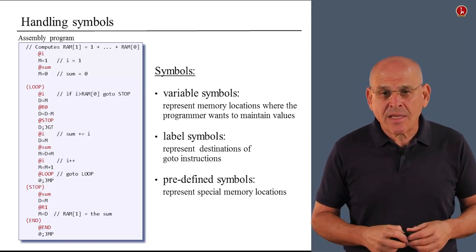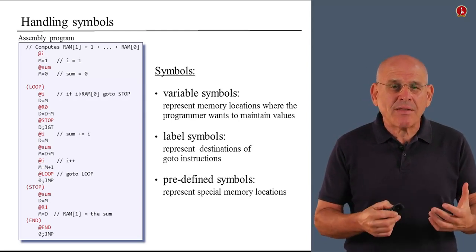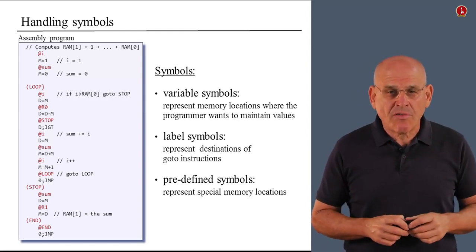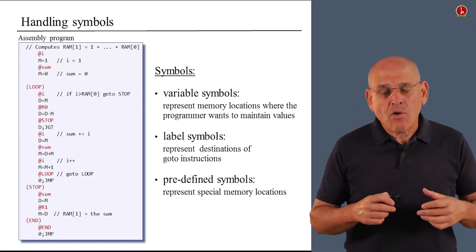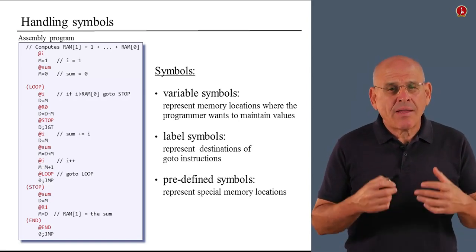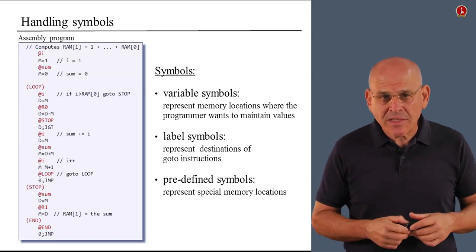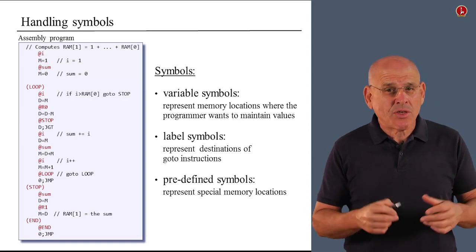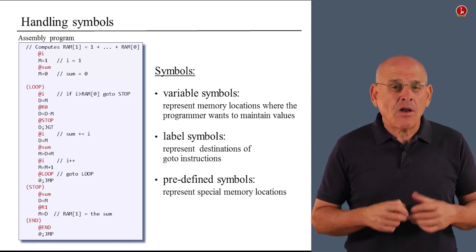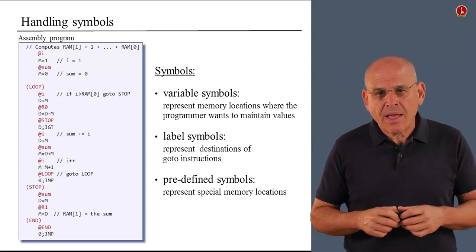Another kind of symbols is label symbols that represent destinations of goto commands. In this example that we are facing here, we have three such symbols: loop, stop, and end.